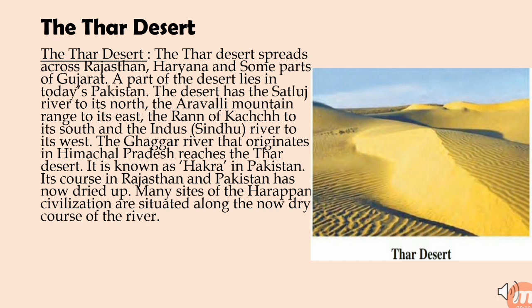The Thar Desert spreads across Rajasthan, Haryana, and some parts of Gujarat; a part also lies in today's Pakistan. The desert has the Sutlej river to its north, the Aravalli mountain range to its east, the Rann of Kutch to its south, and the Indus (Sindhu) river to its west. The Ghaggar river, originating in Himachal Pradesh, reaches the Thar Desert and is known as the Hakra in Pakistan; its course in Rajasthan and Pakistan has now dried up. Many sites of the Harappan civilization are situated along this now-dry riverbed. The Indus civilization — also called the Indus Valley or Harappan civilization — was the earliest known urban culture of the Indian subcontinent, with nuclear dates of approximately 2500–1700 BCE.